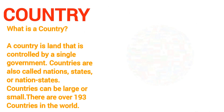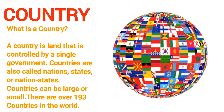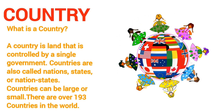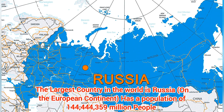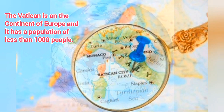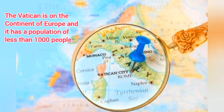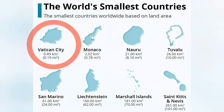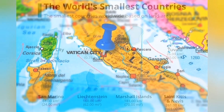On these 7 continents, there are about 193 countries. What is a country? A country is a land that is controlled by a single government. The largest country in the world is Russia, and it's on the European continent, with a population of about 144 million people. The smallest is the Vatican, with less than 1,000 people. The Vatican is on the European continent as well.